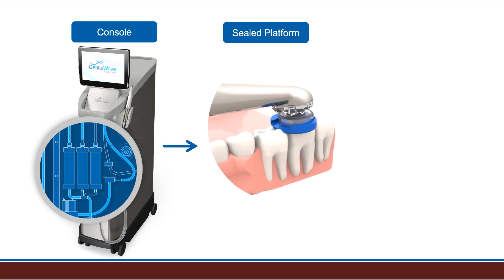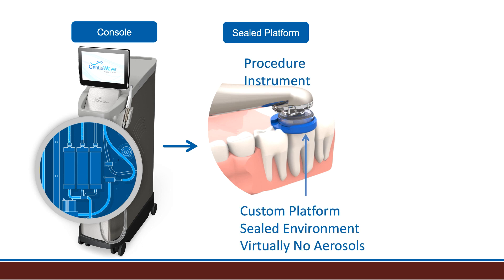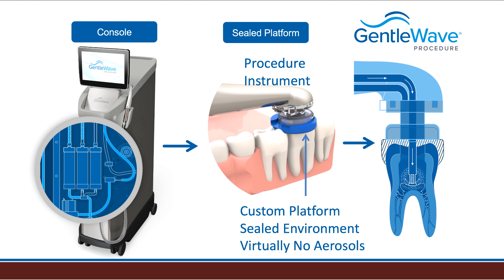The part of the system on the tooth is a procedural instrument and the platform. The platform is essentially a custom gasket that goes between the procedure instrument and the tooth to seal off the tooth and create a closed-loop system that does not leak. Building the platform correctly is the craftsmanship part of the procedure, done just before the procedure cycle, and an experienced clinician can make one in about two or three minutes. The sealing caps come in a variety of lengths, and the correct one will hold the tip of the instrument, or the sound bar, about one millimeter off the bottom of the pulp chamber. The cap is clear so the operator can observe the exhaust fluids while the machine is running.